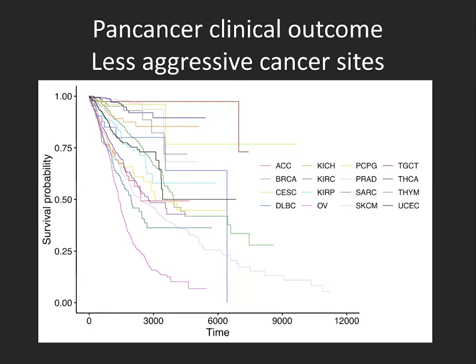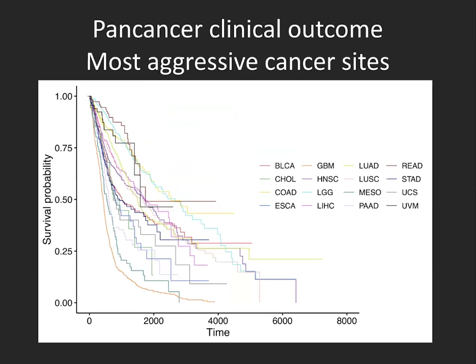Several of these cancers have pretty long follow-ups compared to the most aggressive cancer sites within TCGA, where patients have poorer prognosis. The main reason I'm showing you this is that there is huge heterogeneity within and between each of these cancer sites across different tissues.